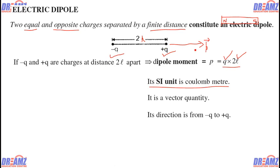Now, what will happen if the dipole is placed inside an electric field? We know that force F is equal to qE. If there are two charges placed in a field of intensity E, then each charge will experience a force. The question arises: what will be the direction of that force? The positive charge experiences a force in the direction of E.